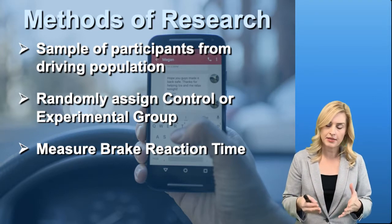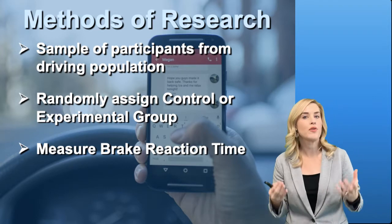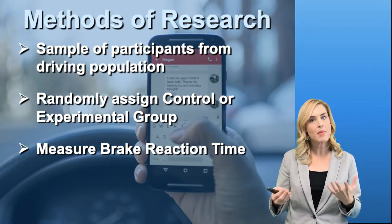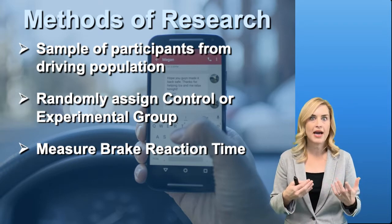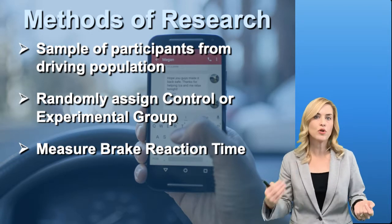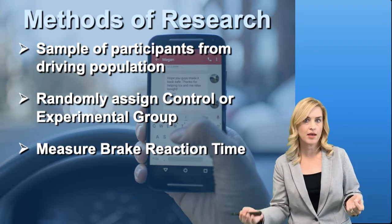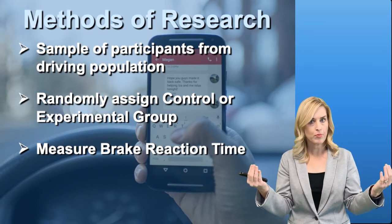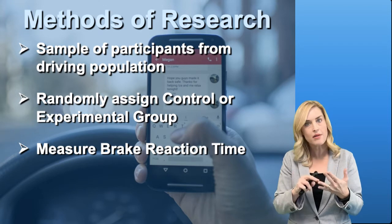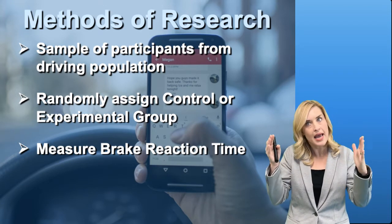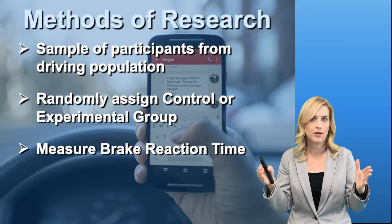What we might want to do in a case like this is get a group of people that have a driver's license and also use cell phones, because we might want to test what brake reaction is when people are texting and driving versus people who are not texting and driving. We'll take a population of people that use cell phones as well as have a driver's license. We also want to look at what is the age range, possibly, of the people that we're looking at.